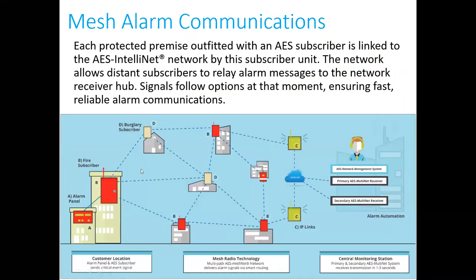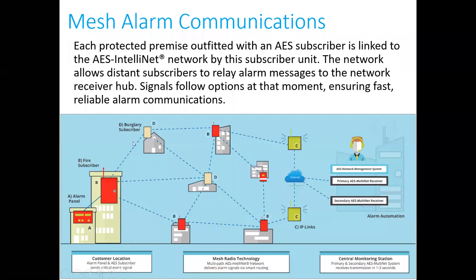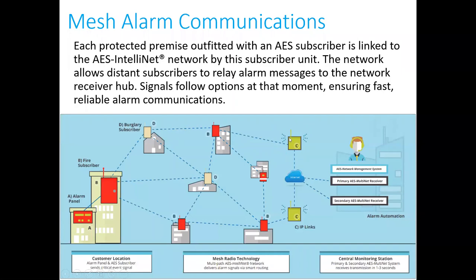One thing that took me a while to wrap my head around with this mesh alarm concept is we don't want the signals to go too far. We don't want to turn this into a tower system where all subscribers are talking directly to the IP links. We want them to hop back and forth, because if the radio signal goes too far it overshoots the ability of that little two-watt radio to do its job. Signals should hop from subscriber to subscriber until they get back to the IP link, which then goes to the internet and to the receiver at the dispatch center.